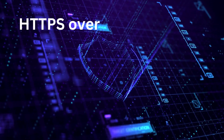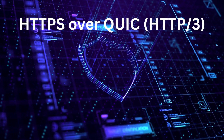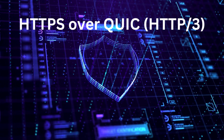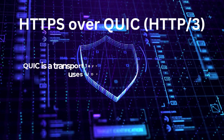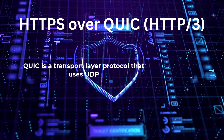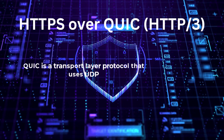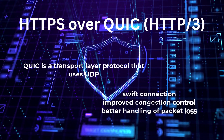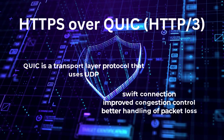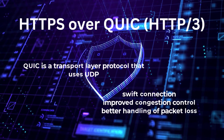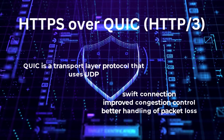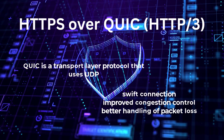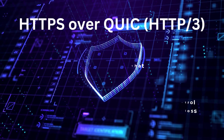Now let's discuss HTTPS over QUIC, which stands for QUIC UDP Internet Connections. QUIC is a transport layer protocol that uses UDP, or User Datagram Protocol, instead of TCP. By implementing QUIC, we can achieve faster connection establishment, improved congestion control, and better handling of packet loss. When combined with HTTP version 3, the latest version of the HTTP protocol, QUIC enables faster and more reliable HTTPS communication.